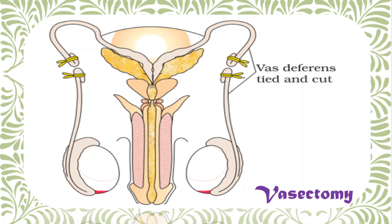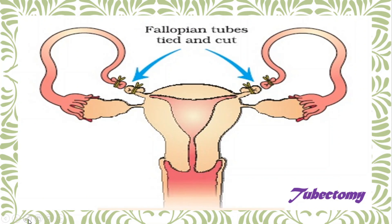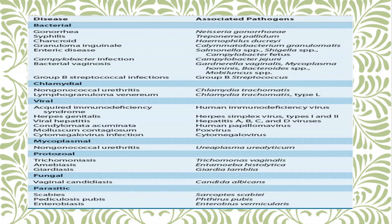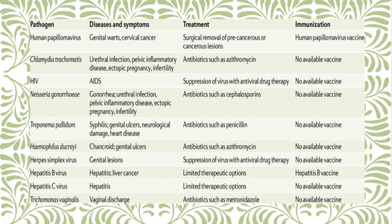Vasectomy is done in males — the vas deferens is cut and tied to prevent the path of sperm, enabling population control. The figure shown here illustrates tubectomy in females, where the fallopian tube is cut and tied so that the ovum is prevented from implantation and fertilization. Here you can also see a list of different types of STDs — sexually transmitted diseases — along with their pathogens and symptoms.